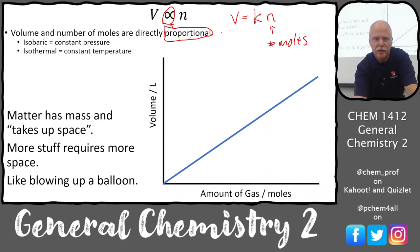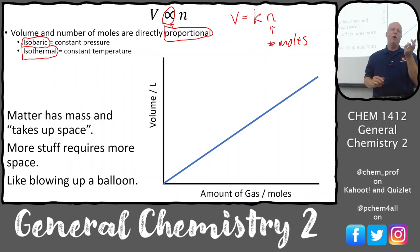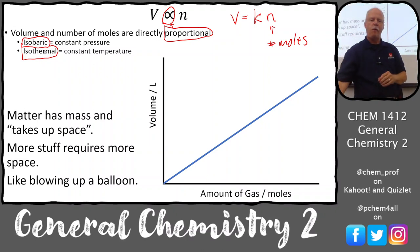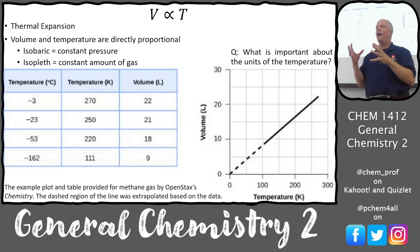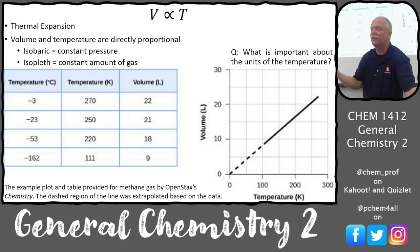That constant holds as long as you're at constant pressure — that's called isobaric conditions — and constant temperature, which is isothermal. 'Iso' means same; 'baric' relates to pressure (bar is a unit of pressure), and 'thermal' relates to temperature. Volume is also proportional to temperature under isobaric conditions. There's also 'isopleth' — same amount of gas — from 'plethora,' meaning an amount of something.